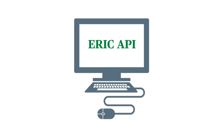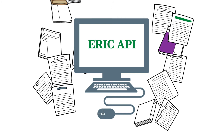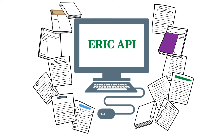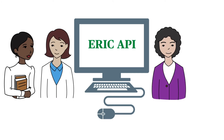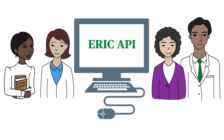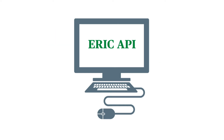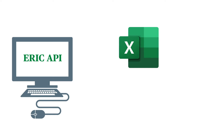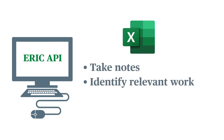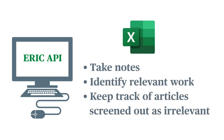ERIC launched the API to help share our almost 2 million records with developers and researchers who want to integrate ERIC data with their tools. This video demonstrates how you can use the API when conducting a systematic literature review. One benefit of the API is that it allows you to export work to a Microsoft Excel spreadsheet so you can take notes, identify relevant work, and keep track of articles screened out as irrelevant. This significantly eases the burden of a literature review.